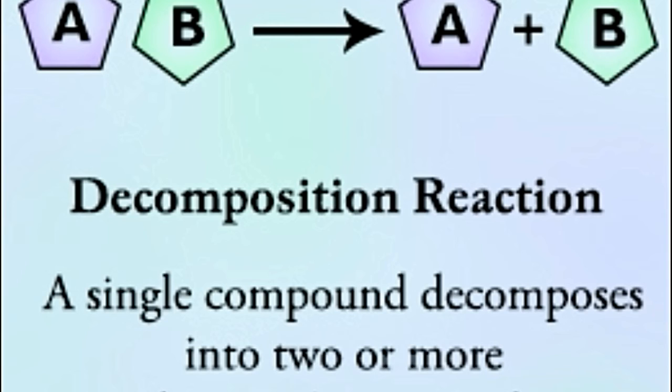Examples of decomposition reaction: Potassium chloride decays to form potassium and chlorine. 2KCl yields 2K plus Cl2. Hydrogen peroxide decomposes into water and oxygen. 2H2O2 yields 2H2O plus O2.